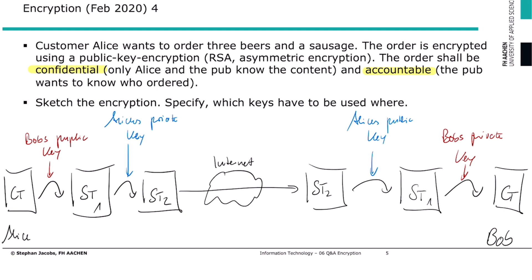What is important to mention, not only for this task: if you argue which key is used, you always have to specify two attributes. The first is either Alice or Bob, or sender or receiver. The second is public or private. It's not sufficient to say 'the public key' or 'Alice's key,' because then it's not 100% clear which one to take. If you forget one of these attributes, the answer is not correct.